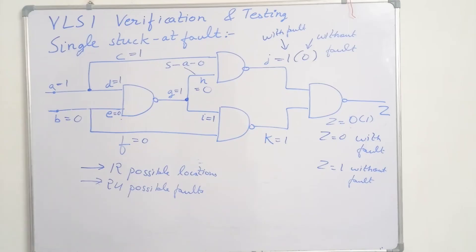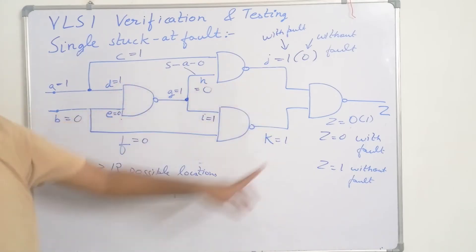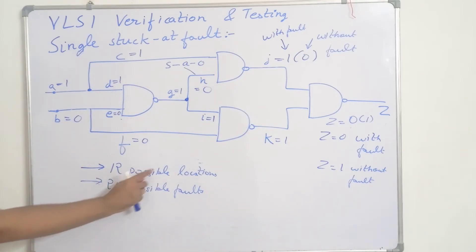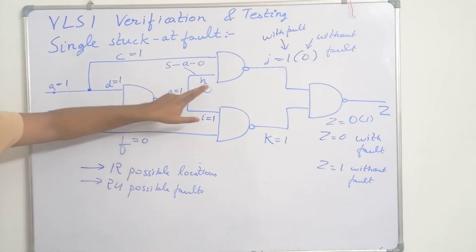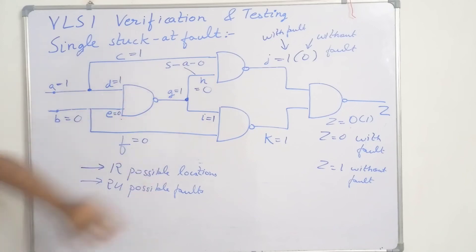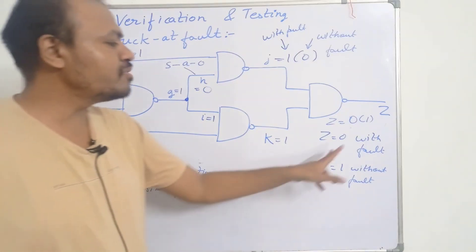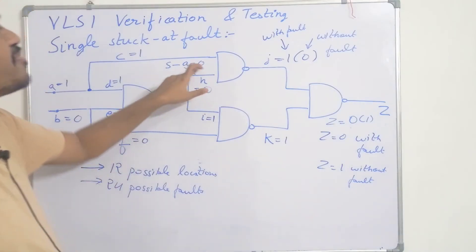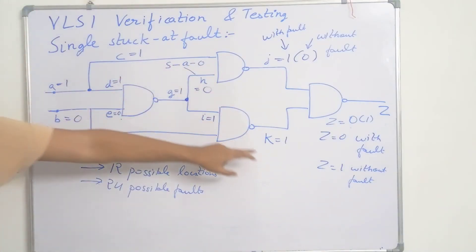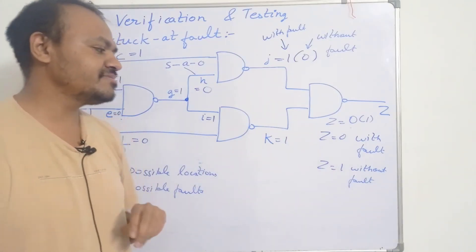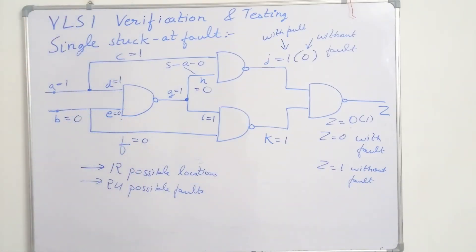As you can see, in this circuit there were 12 possible fault locations and 24 possible faults. We took the example of H line stuck at 0. When H is stuck at 0, the output is 0 with fault. If this fault was not there, the output should be 1 without fault.